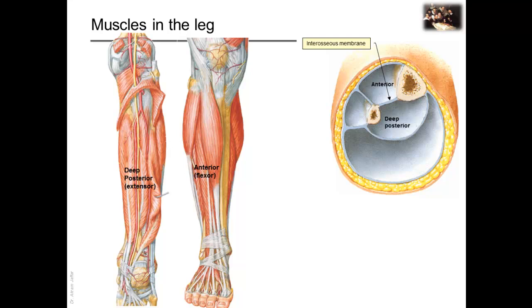In the deep part of the posterior compartment, the muscles have their counterparts in the anterior compartment. They are tibialis posterior, flexor digitorum longus, and flexor hallucis longus. The muscles of the deep part of the posterior compartment thus plantar flex the foot and flex the digits.